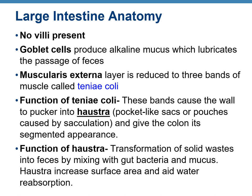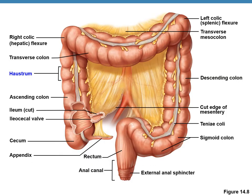Goblet cells are special cells that produce alkaline mucus, which lubricates the feces for smooth passage. The muscularis externa is reduced to only three bands of muscles called taenia coli. The function of taenia coli is to cause the formation of pocket-like structures known as haustra. The haustra give the colon its characteristic segmented appearance and help in transforming solid waste into feces by mixing it with bacteria and mucus, increasing surface area and aiding water reabsorption.